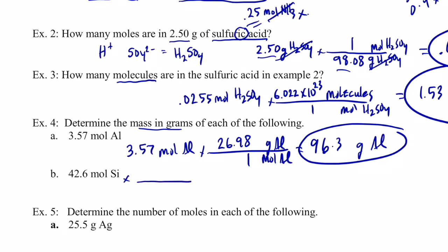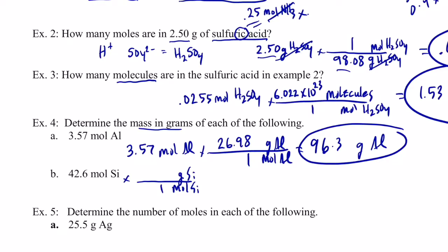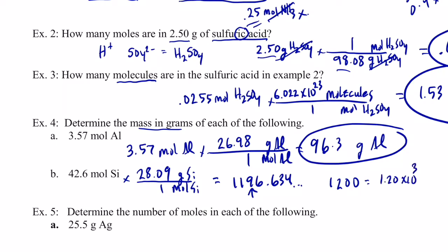Example 4b: 42.6 moles of silicon — moles on the bottom, grams on top, one per mole. Silicon is 28.09 grams per mole. So 42.6 times 28.09 equals 1196.634 on the calculator. Rounded to three significant figures, that is 1.20×10³ grams of silicon.